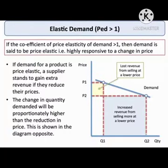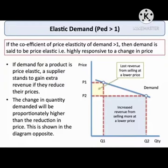Second is elastic demand. If the coefficient of Price Elasticity of Demand is greater than 1, then demand is said to be price elastic, or highly responsive to a change in price. If demand for a product is price elastic, a supplier stands to gain extra revenue if they reduce their prices. The change in quantity demanded will be proportionately higher than the reduction in price, as shown in the diagram.